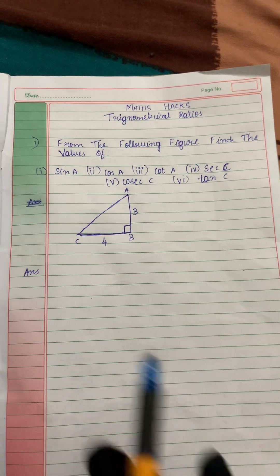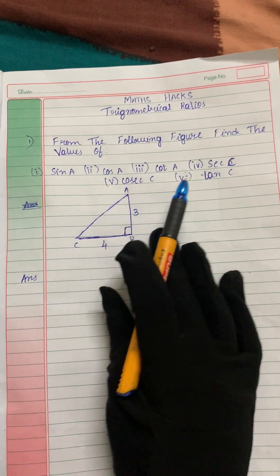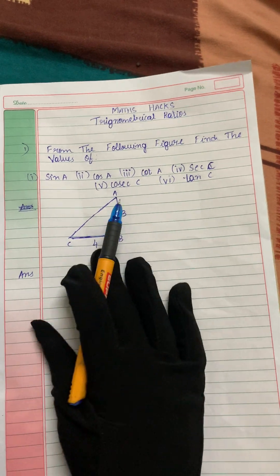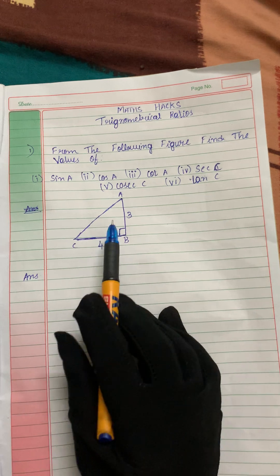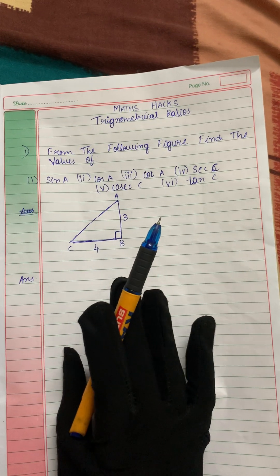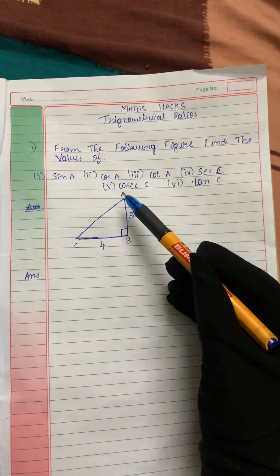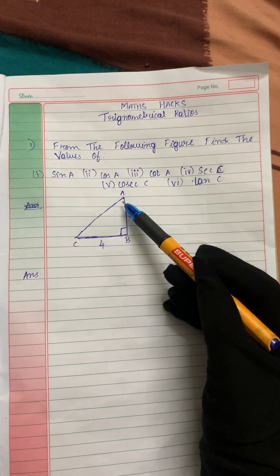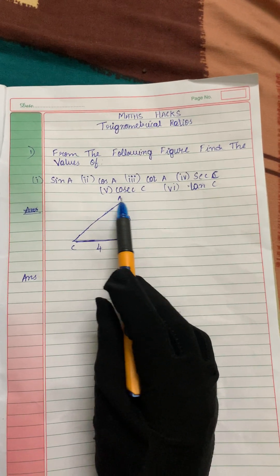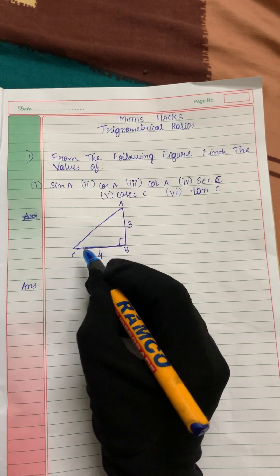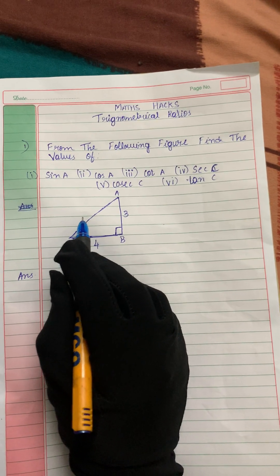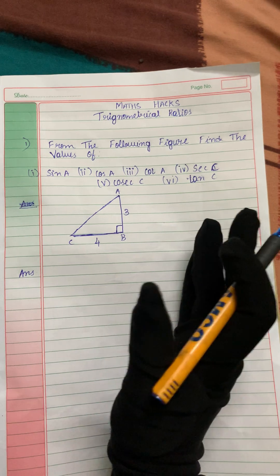From the following figure, find the values of sin, cos, cot, sec, cosec and tan. This is the figure given in the question. We have to find out the values. This is a right angle triangle. The hypotenuse is the longest side of the triangle. This is perpendicular and this is base according to angle A. They have given us the value of perpendicular and base but not the value of hypotenuse. We have to find out the value of hypotenuse.